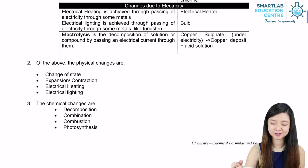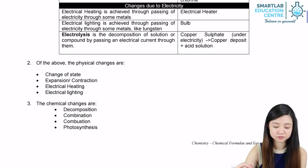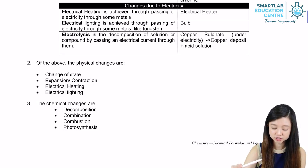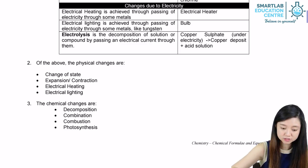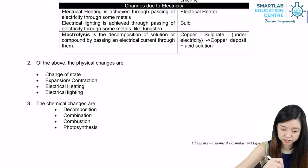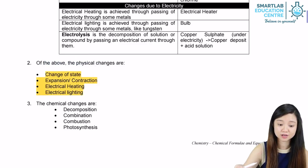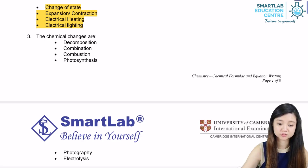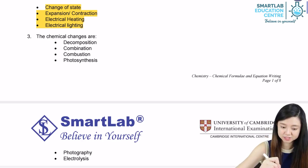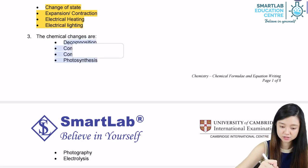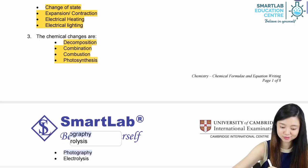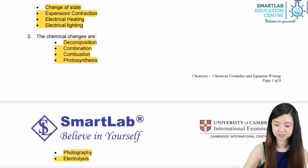So as we can see, the physical changes are: changes of state, expansion and contraction, electrical heating, and electrical lighting. The chemical changes are: decomposition, combination, combustion, photosynthesis, photography, and electrolysis.